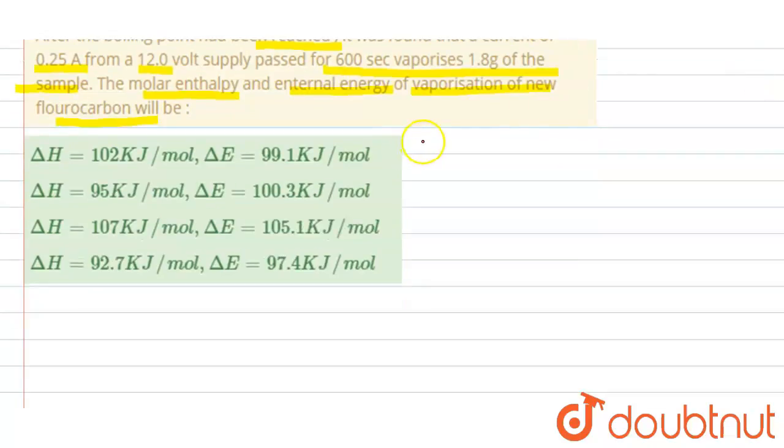So we need to find the molar enthalpy, that is delta H, and we also need to find the internal energy of the vaporization of the new fluorocarbon.